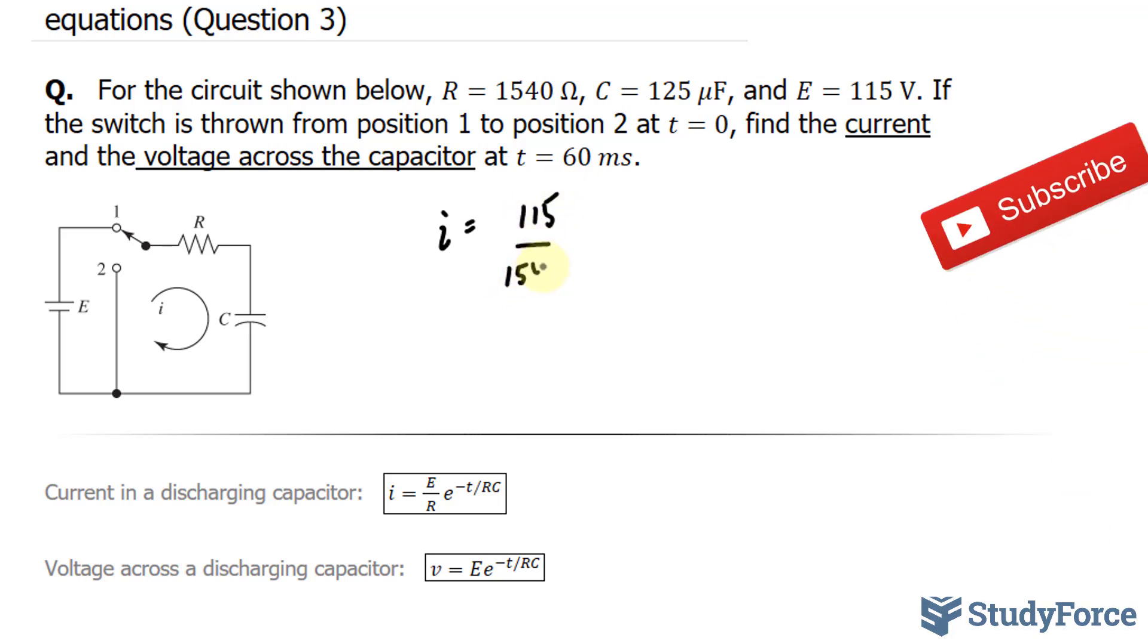Over 1540 times E to the power of negative T over 1540, and our capacitance is 125 microfarads. We need to convert that into farads. So 125 becomes 125 times 10 to the power of negative 6. This represents the formula for the current.